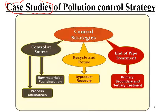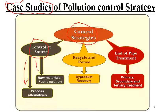What do we mean by a control strategy? It means that you are going to make a strategy to control pollution at different places. You can either control the pollution at the source itself, and you can do it by two ways: first, you can change the process, and second, you can change the raw material itself.